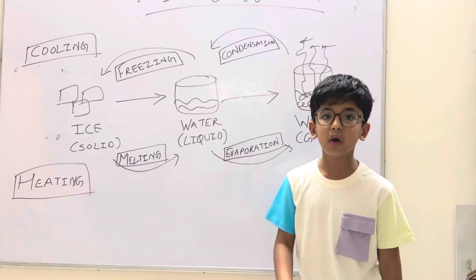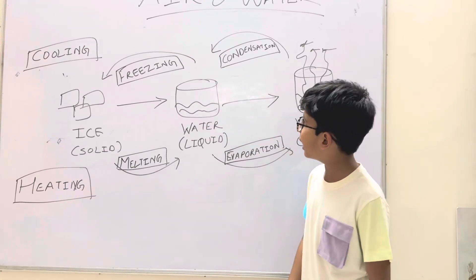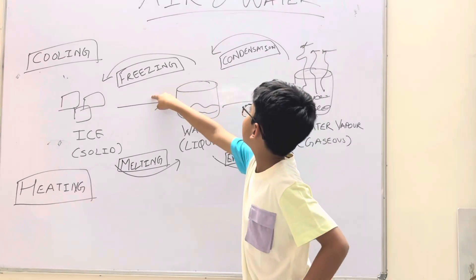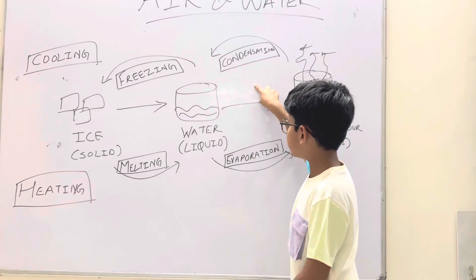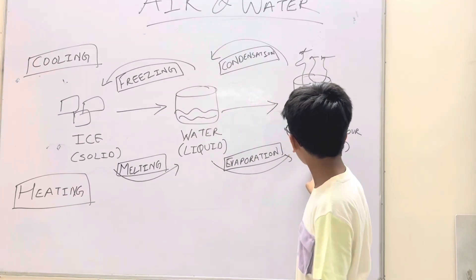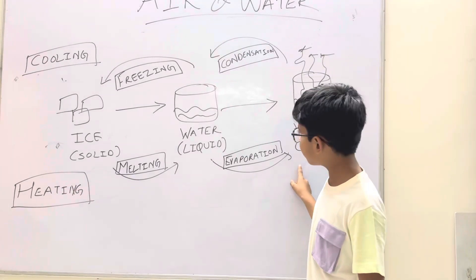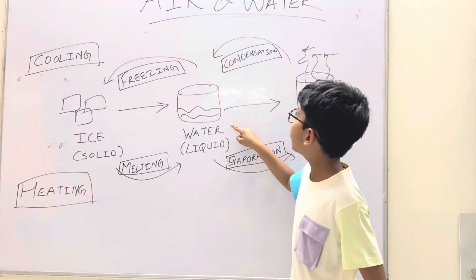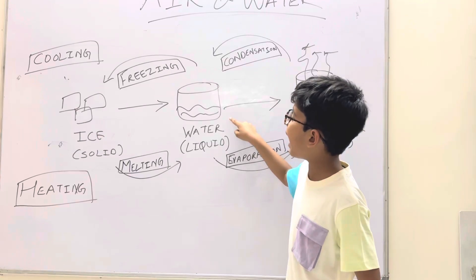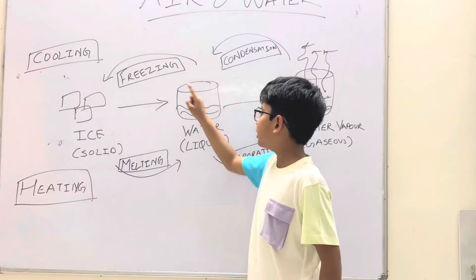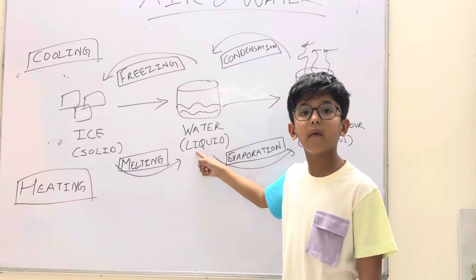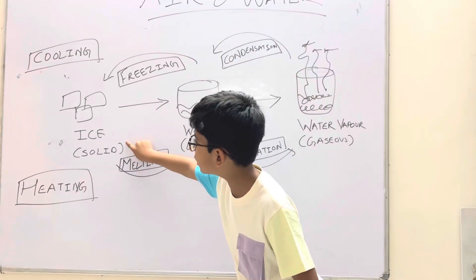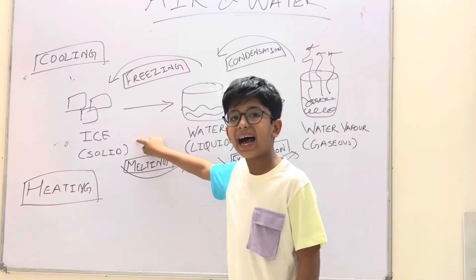The two processes of cooling are condensation and freezing. In condensation, the gaseous form of water — water vapor — changes into the liquid form of water. In freezing, the liquid form of water changes into the solid form of water — ice.